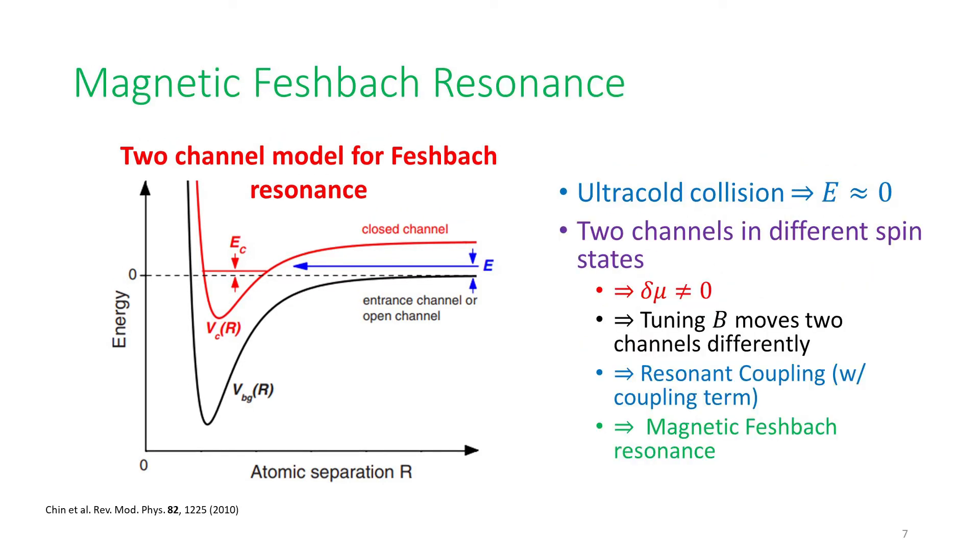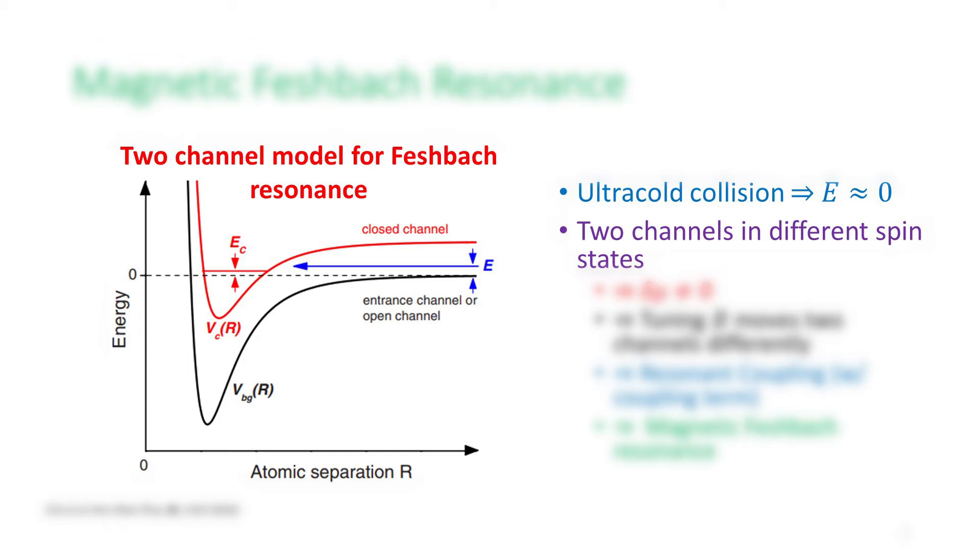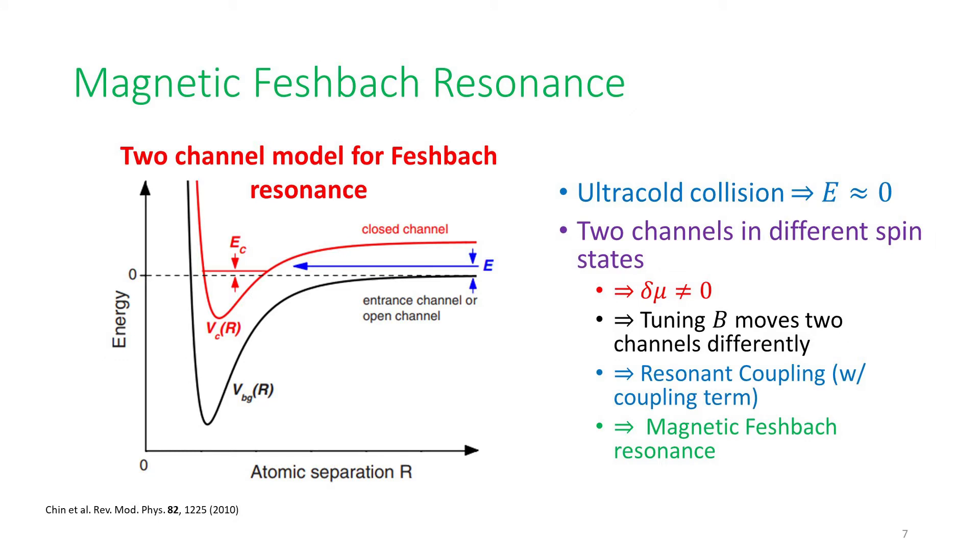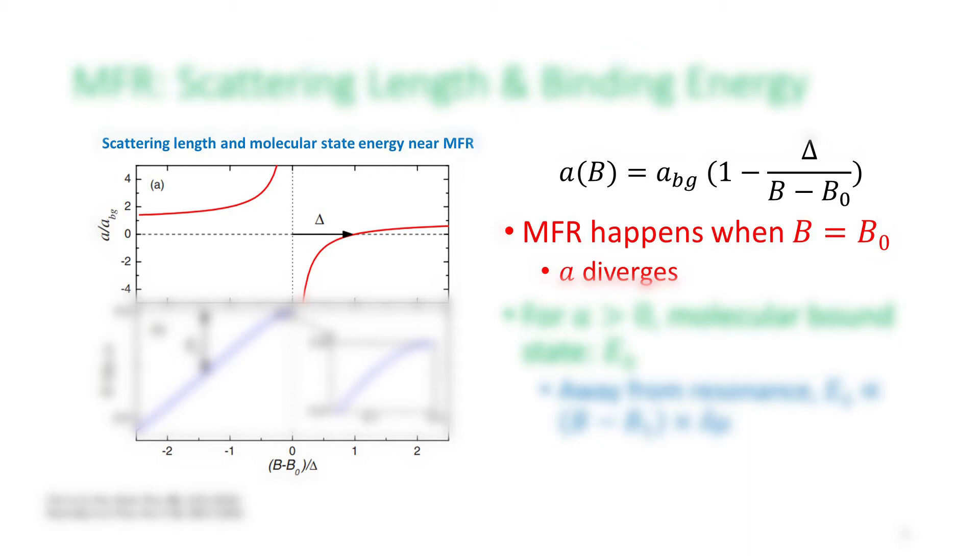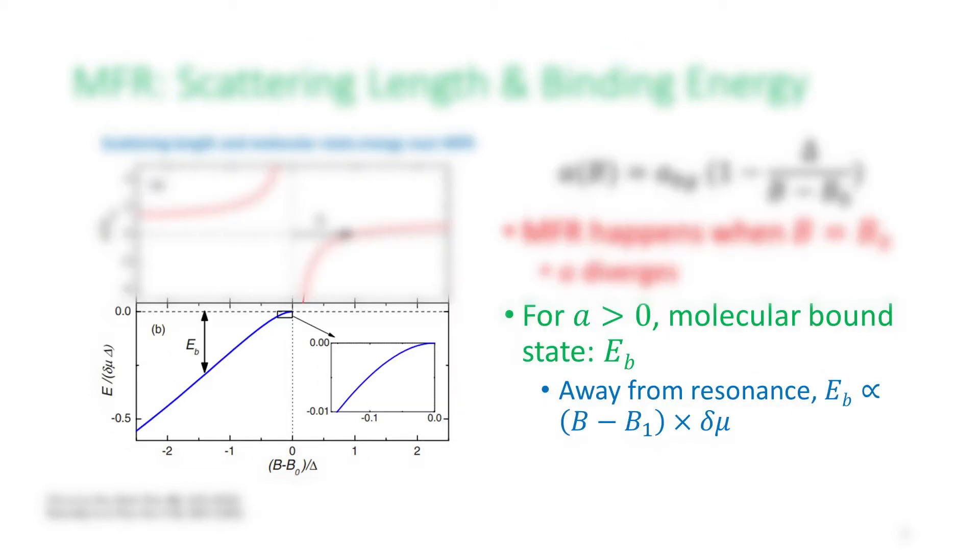The magnetic Feshbach resonance is a special case of Feshbach resonance. The energy separation between the two channels comes from the Zeeman shift caused by the external homogeneous magnetic field. When the atoms in the two channels are in two different spin states, there is a non-zero magnetic moment difference between the two channels. Therefore, tuning the magnetic field B moves the energy of the two channels by different amounts. This allows us to reach the resonant coupling that I mentioned in the previous slide and approach magnetic Feshbach resonance. The general behavior of the two-atom system is predictable near the magnetic Feshbach resonance. The S-wave scattering length can be described by the formula on the top right, and it diverges right at the resonance. For positive scattering length, the atoms are bound in a molecular state with a binding energy quadratic to the magnetic field when it's very close to the resonance, but linear to the magnetic field when it's far away from the resonance.